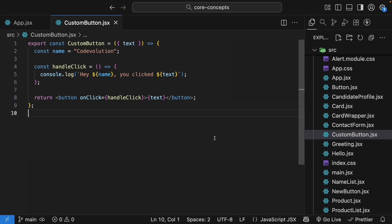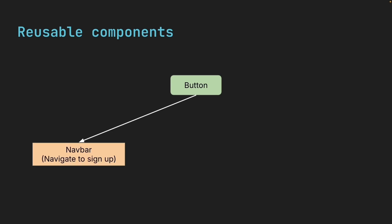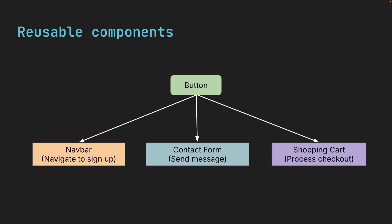Previously, we learned how to handle events in React components. But let me show you a problem you will run into when building real applications. Say you're building a button component and you want to use this same button all over your application — in your navbar for sign up, in your contact form for send message, or in your shopping cart for checkout. Same button component, but each one needs to do something completely different when clicked. The button component itself shouldn't know about signups, contact forms, or shopping cards. That would make it impossible to reuse.